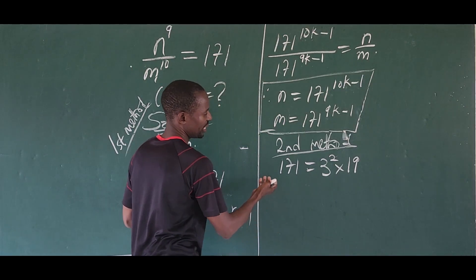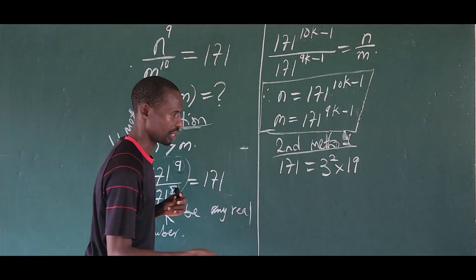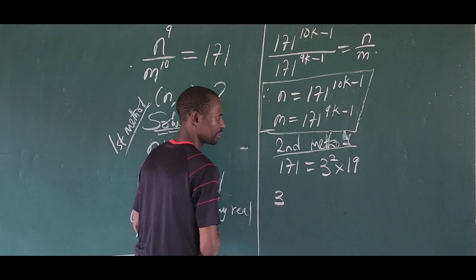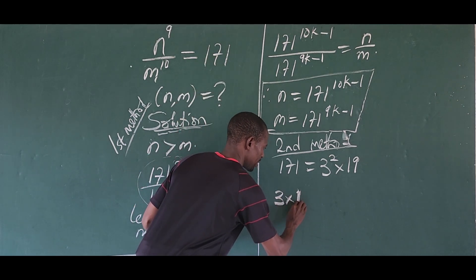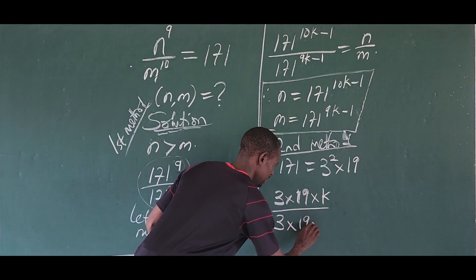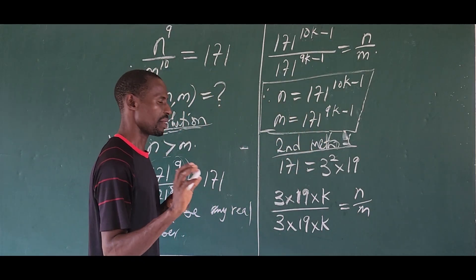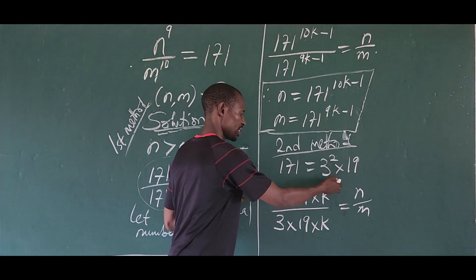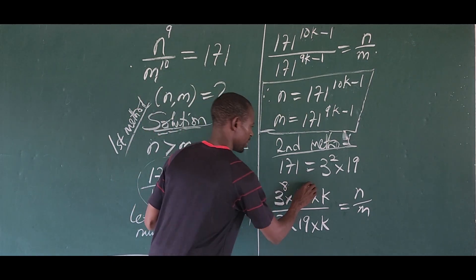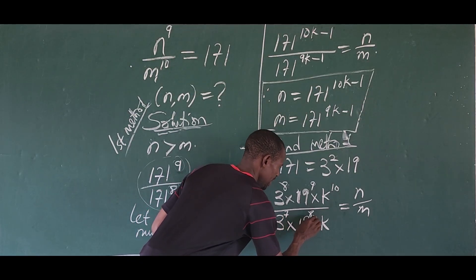In the second method, let K be any natural number. We can now split the fraction to give us 3 times 19 times K in the numerator, all over 3 times 19 times K in the denominator, equal to n over m. The question is: to what power do we raise each quantity? We raise the components of the numerator to powers 8, 9, and 10 respectively, and the denominator components to powers 7, 8, and 9 respectively. Remember, K belongs to the set of natural numbers.